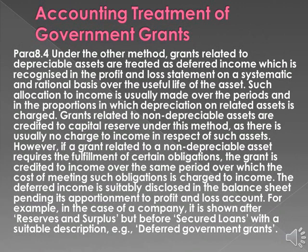Para 8.4: Under the other method, grants related to depreciable assets are treated as deferred income, which is recognized in the profit and loss statement on a systematic and rational basis over the useful life of the asset. Such allocation to income is usually made over the periods and in the proportions in which depreciation on related assets is charged. Grants related to non-depreciable assets are credited to capital reserve under this method. However, if a grant related to a non-depreciable asset requires the fulfillment of certain obligations, the grant is credited to income over the same period over which the cost of meeting such obligations is charged to income. The deferred income is suitably disclosed in the balance sheet — for example, in the case of a company, it is shown after reserves and surplus but before secured loans with a suitable description such as 'Deferred Government Grant.'